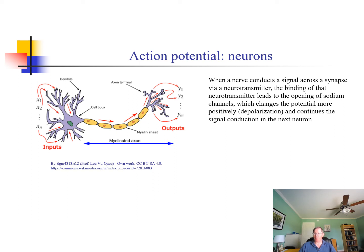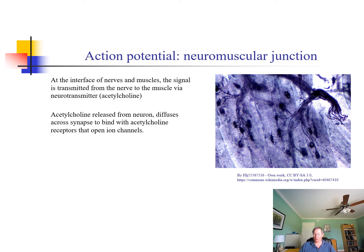At a neuromuscular junction, where the nerve interfaces with skeletal muscle — as shown here in this micrograph — you can see the skeletal muscle has small interfaces where neurons come down and terminate. That neuromuscular junction has a small synapse where acetylcholine diffuses across and opens sodium channels, permitting the depolarization of the skeletal muscle so that it can contract.